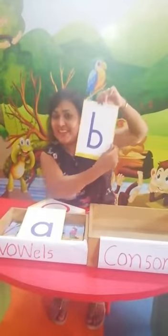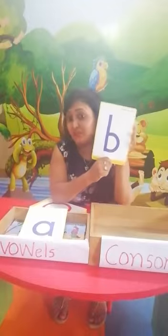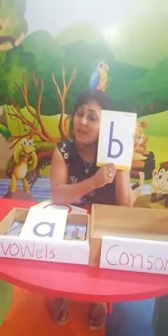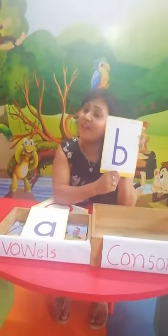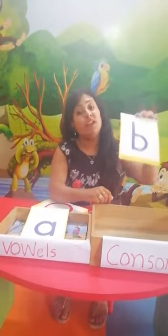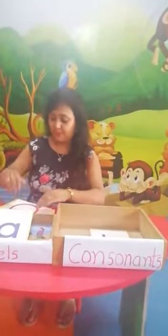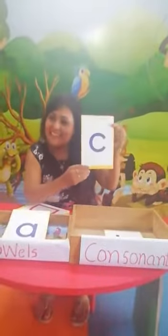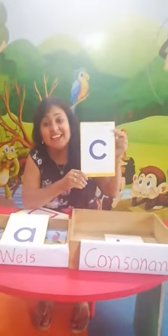Now, what is this? P — is this a consonant or a vowel? This is a consonant. So I will keep this in the consonant box. Now tell me, which letter is this? This is C. C — very good, it is a consonant.